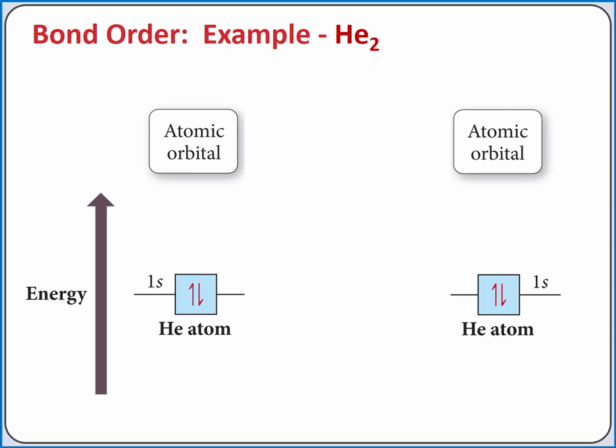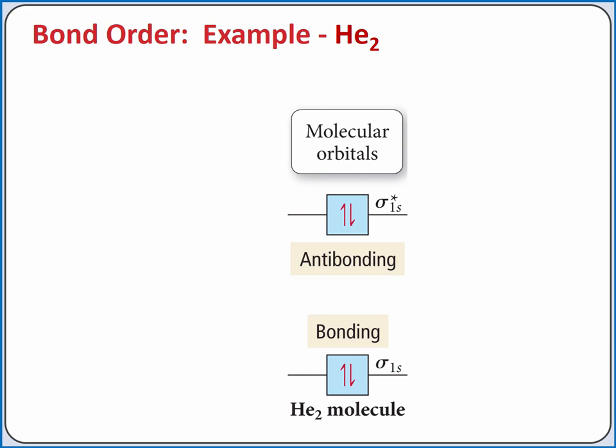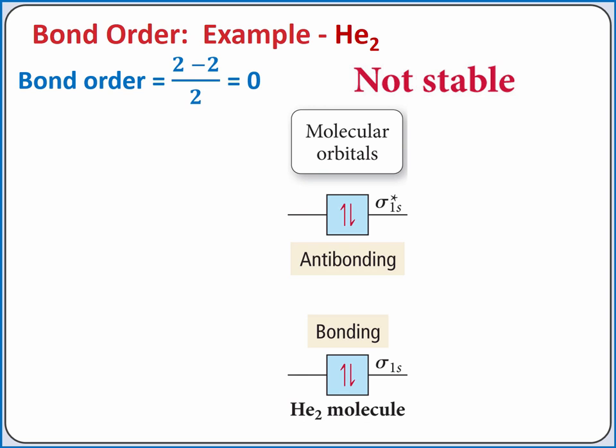Let's apply molecular orbital theory to He₂. We start with the atomic orbitals for our two helium atoms — each has two electrons in the 1s subshell. Combining the two atomic orbitals creates a bonding molecular orbital lower in energy and an antibonding molecular orbital higher in energy, using up the atomic orbitals. To calculate the bond order: 2 electrons in bonding orbitals minus 2 electrons in antibonding orbitals, divided by 2, gives a bond order of 0. Since the bond order is 0, creating the molecule would not lower the overall energy, so it should not be stable — and indeed, we have no evidence that He₂ exists.